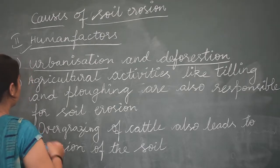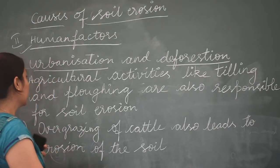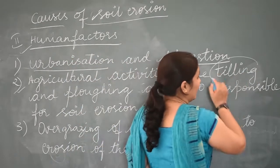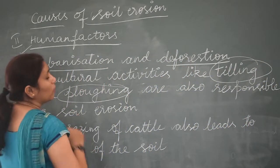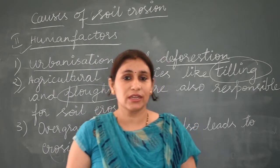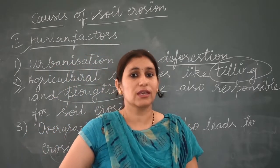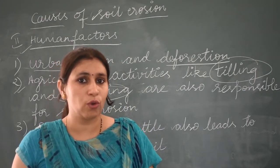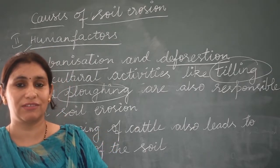Now let's talk about the second human factor which is responsible for soil erosion — agricultural activities like tilling and plowing. What are agricultural activities?